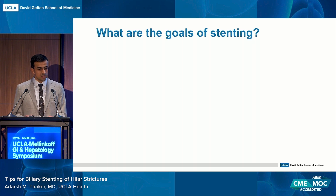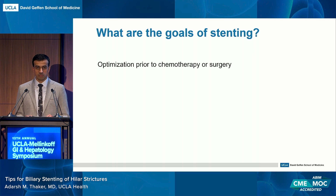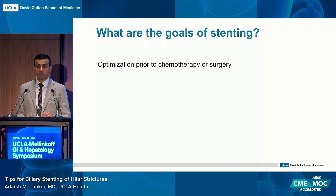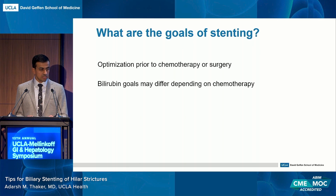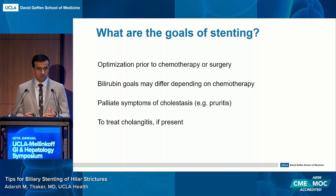What are the actual goals of stenting? Number one is optimization prior to chemotherapy or surgery — liver surgeons don't like to operate on a duct under pressure. For non-surgical candidates, the goal is often for the oncologist to reach a bilirubin level where chemotherapy can be given — and not all chemotherapies need a normal bilirubin. We also do this for palliation of cholestasis-related pruritus or to drain cholangitis. It's more than just getting the number down; it's getting drainage toward some specific goal. Sometimes it may be appropriate not to do an ERCP but to start an alternative treatment.